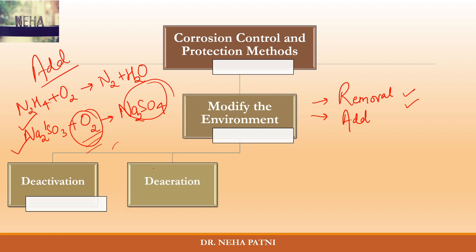The next step is de-aeration — 'de' means removal, so this is removal of air. If you remember the oxygen concentration cell, oxygen is majorly responsible for creating the anodic and cathodic portions. What you can do here is exclude oxygen from the aqueous environment, which reduces metal corrosion. You can expel dissolved oxygen by adjusting the temperature together with mechanical agitation.